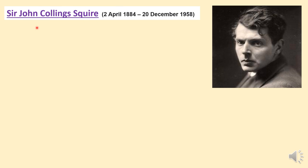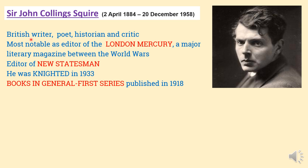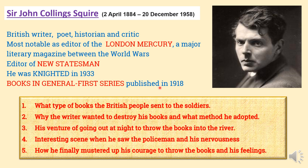'On Destroying Books' was written by Sir John Collings Squire, who is also known as J.C. Squire. J.C. Squire was a British writer, poet, historian and critic. He was most notable as editor of the London Mercury, a major literary magazine between the world wars. He also remained editor of another English magazine, New Statesman. For his services he was knighted in 1933. Today's essay has been taken from 'Books in General, First Series,' published in 1918.